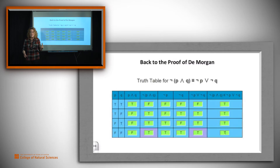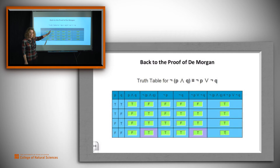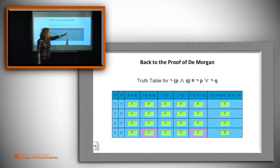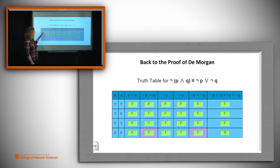Why? Let's take a look at how we proved De Morgan. We proved it with a truth table. We went through columns: p, q, (p and q), not (p and q), not p, not q, and not p or not q. Then we showed that those two columns were equivalent, and we see that we got a tautology. It doesn't matter what the values of p and q are — we always get T.